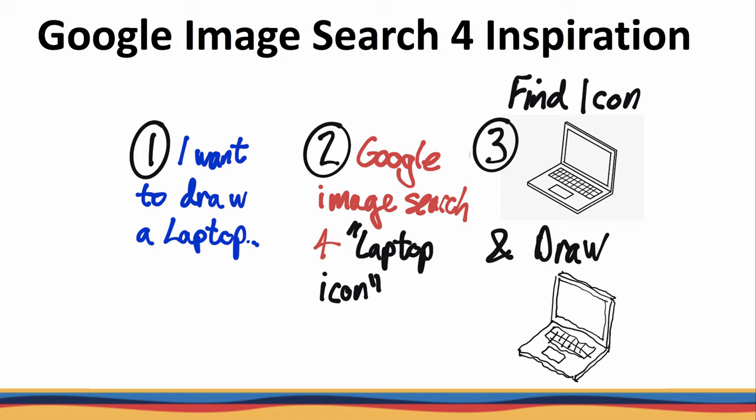So for example, if I wanted to draw a laptop, I would do a Google image search for 'laptop icon.' It's important to put 'icon' there because that'll give you a simple drawing. As you can see on the right, I found a laptop that is similar to what I would like to draw — and here's my drawing of the laptop. You could use that not just for laptops but for a car icon or light bulb icon.